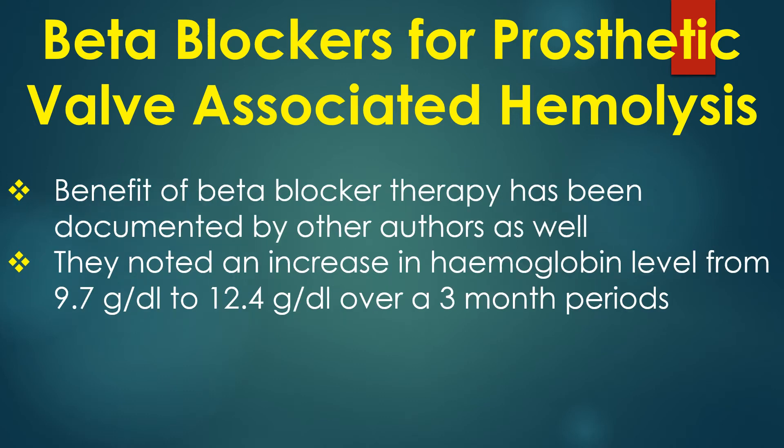Others hypothesized that the slower heart rate was the mechanism of reduced hemolysis in their cases. Benefit of beta blocker therapy has been documented by other authors as well, who noted an increase in hemoglobin level from 9.7 to 12.4 g per deciliter over a 3 month period. There is also personal experience of significant decrease in hemolysis with beta blocker therapy over a period.